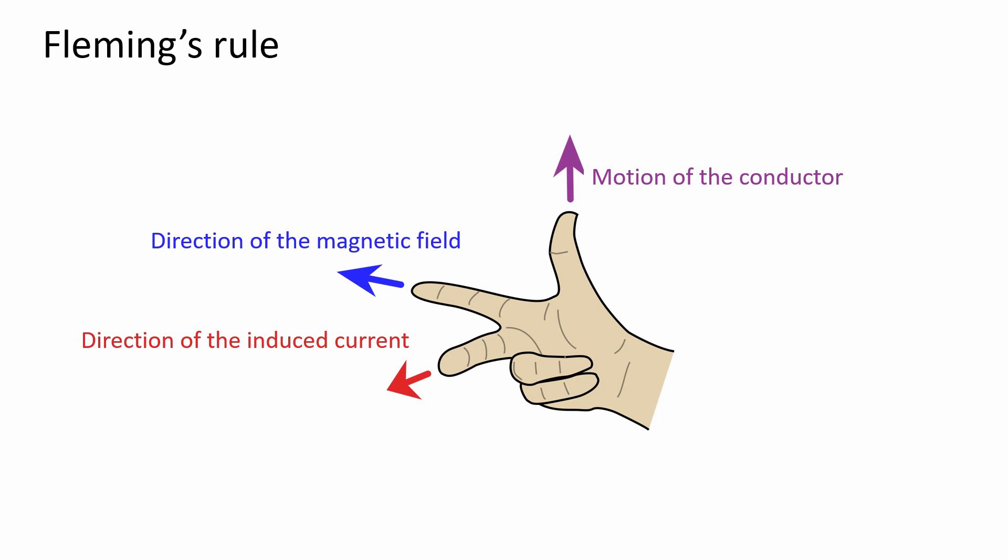The thumb points in the direction of the conductor's motion relative to the magnetic field. The first finger points in the direction of the magnetic field. Finally, the second finger represents the direction of induced current through the conductor. This figure shows how you should point your fingers.